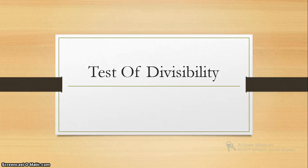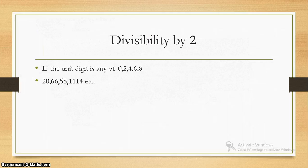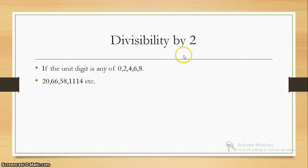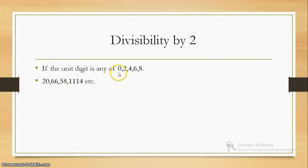Now we will see the tests of divisibility — the important part from the point of view of your aptitude. If you know all the divisibility tests, you can solve aptitude examples very easily. First, divisibility by 2: if the unit digit of any number is 0, 2, 4, 6, or 8, then the number is divisible by 2. Consider 20, 60, 58 — look at the unit place digits; these are from 0, 2, 4, 6, or 8, hence these numbers are divisible by 2.